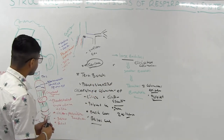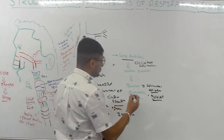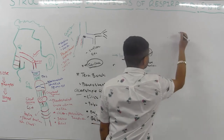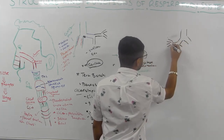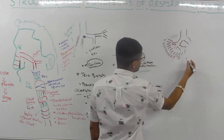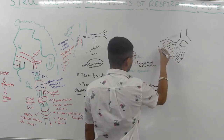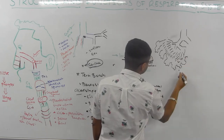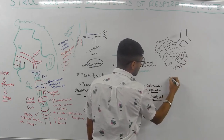After the terminal bronchioles — which do not participate in gas exchange — comes the respiratory bronchioles. This marks the beginning of the respiratory zone. The respiratory bronchioles start to participate in gas exchange.